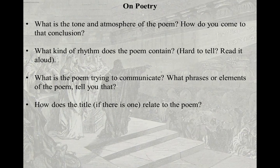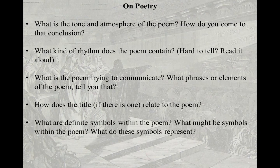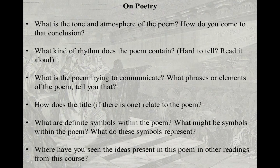How does the title, if there is one, relate to the poem? Some poems have titles that give lots of insight — 'Thanatopsis' by William Cullen Bryant will be one we read. However, almost all of Emily Dickinson's poems are without titles, so we have to make sense of them differently. Titles can give us a really good understanding of what the work is about. What are definite symbols within the poem, and what might be symbols? What do these symbols represent, and how do we find and prove that a symbol is what we think it is?